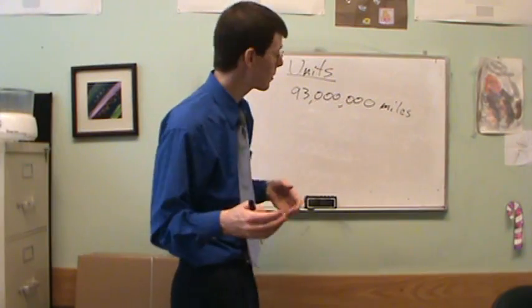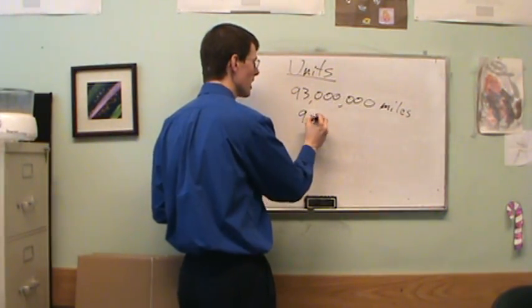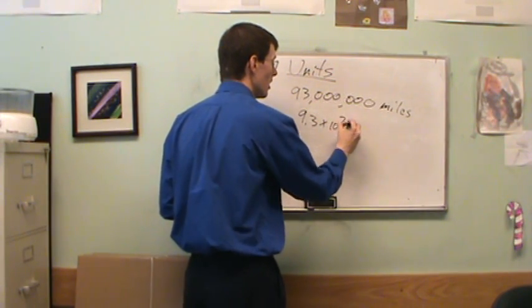If I just tell you the sun is 93 million away, what is that? Kilometers, yards, cubits? What are we talking? No, no. We need to say it's 93 million miles. Let's put that in scientific notation there. This has got to be 9.3 times 10 to the 7th miles.